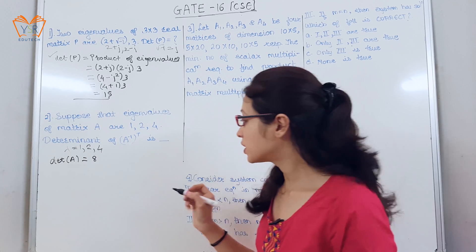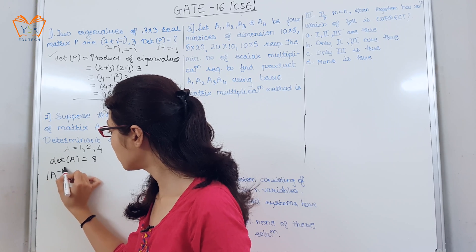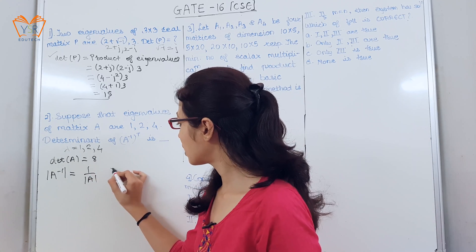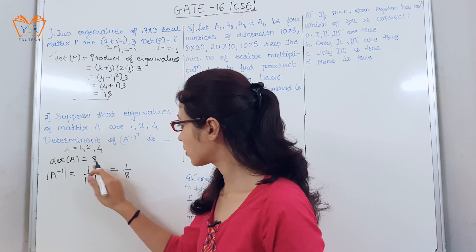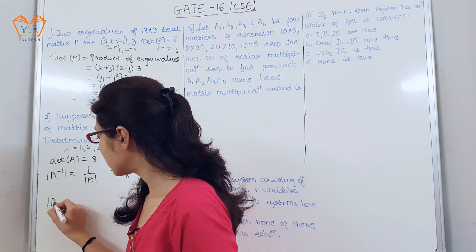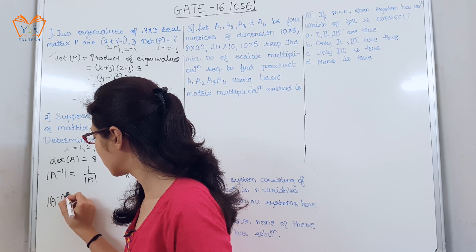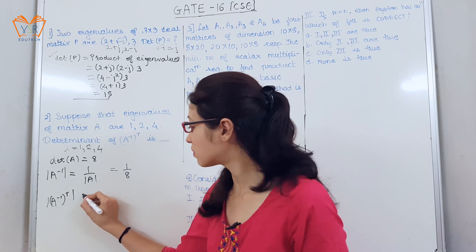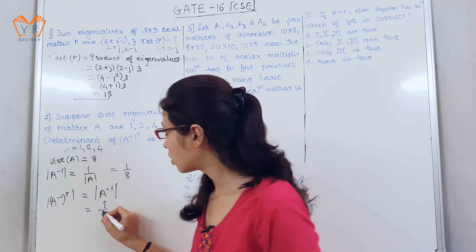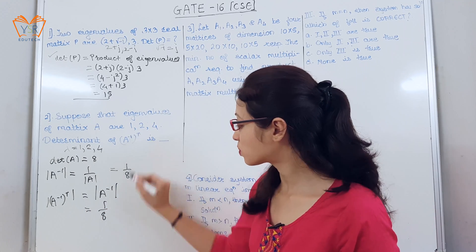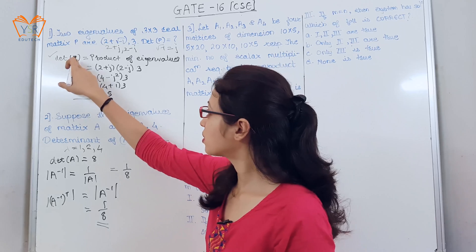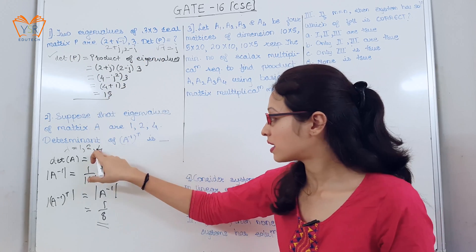One property of determinants states that the determinant of A inverse equals 1 divided by the determinant of A. So determinant of A inverse is 1/8. There is one more property: the determinant of A inverse transpose equals the determinant of A inverse. So the determinant of A inverse transpose is also 1/8. The key property used here is that the determinant equals the product of eigenvalues.